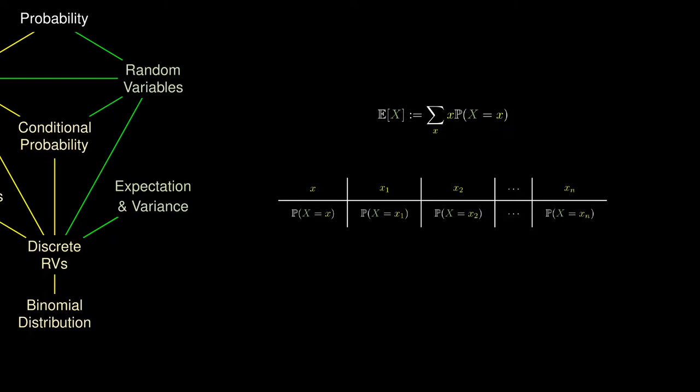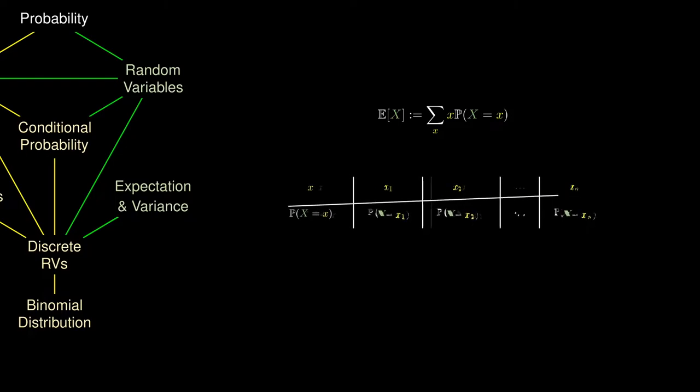In our previous example, we found the probability of obtaining a certain number of hits. This number could be 0, 1, 2, 3, 4, or 5. To calculate the expectation, we multiply each value by its probability and sum them up. Doing the calculation helps us obtain 1.25.